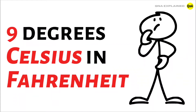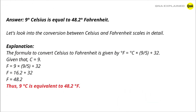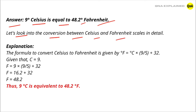9 degrees Celsius in Fahrenheit. The answer is 9 degrees Celsius is equal to 48.2 degrees Fahrenheit. Let us look into the conversion between Celsius and Fahrenheit scales in detail.